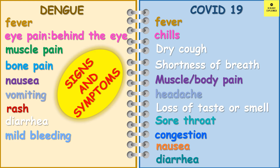Mild bleeding is found in dengue and not in COVID-19. In case of COVID-19, symptoms appear 2 to 14 days after exposure to the virus. In case of dengue, symptoms appear 3 to 14 days after being infected with the virus.